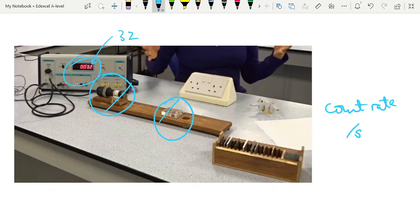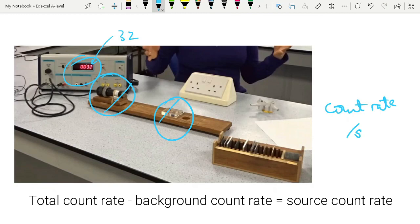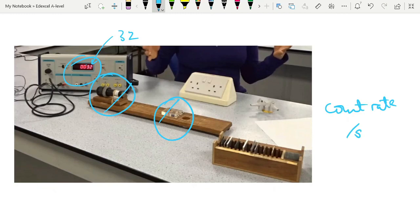And then you do the same thing with your source. You leave your source in front of the GM tube for a minute, find out what the count is, divide that by 60 to get the total count rate, and then you subtract the background count rate from that. So just be very careful when you look at the experimental data that you're given whether it's the count for a minute or whether it's the count rate.